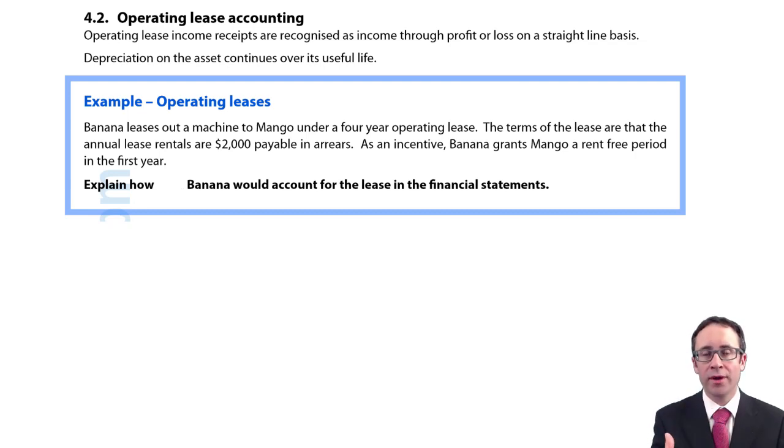Now remember if we have an operating lease that is any lease that is not a finance lease and therefore for it to be that operating lease we still have the risks and rewards. They have not been transferred to the lessee. The lessor still has the risks and rewards of ownership.